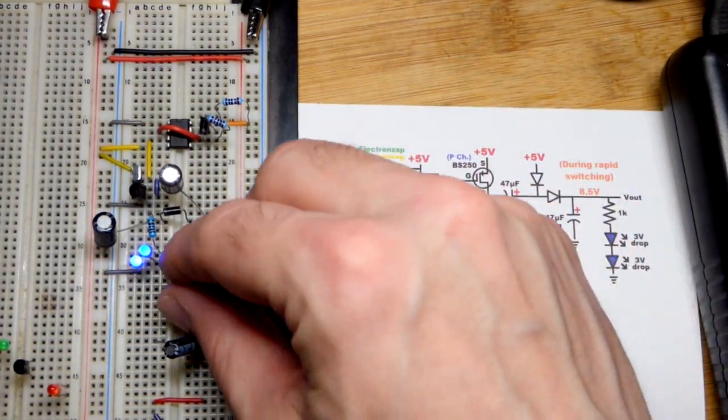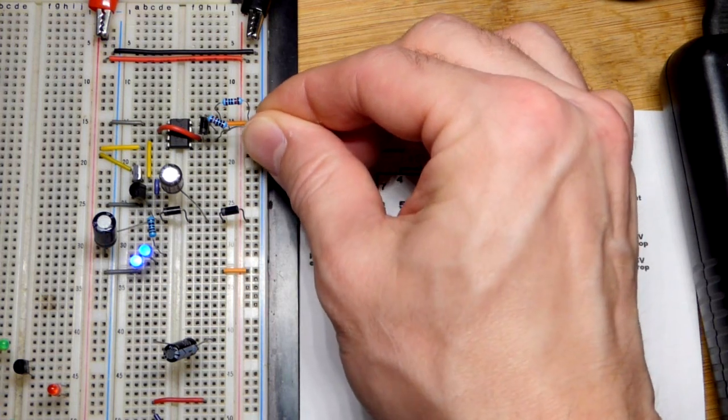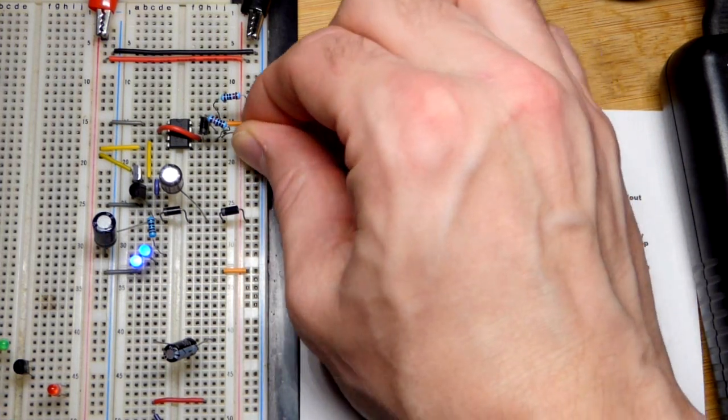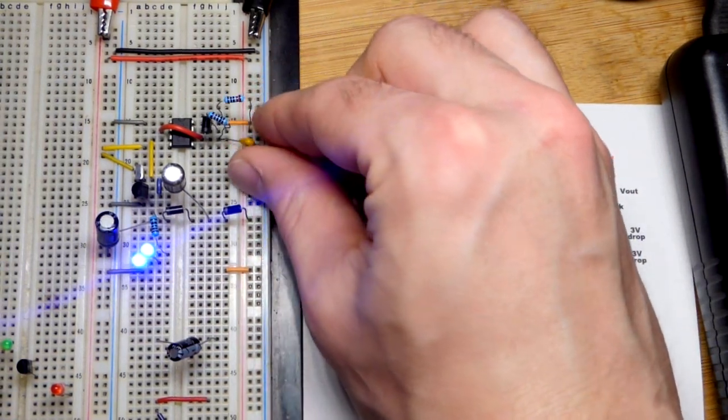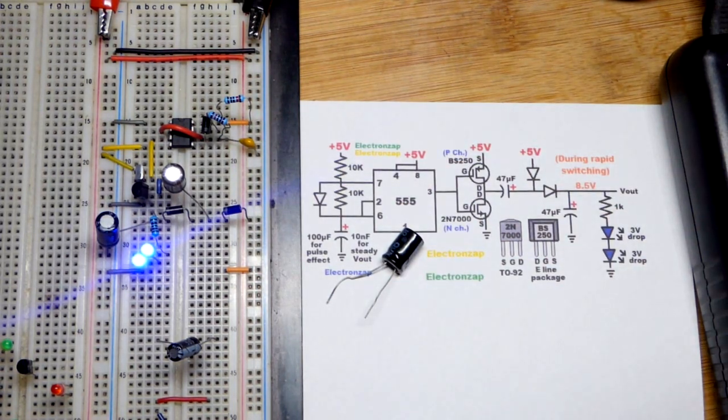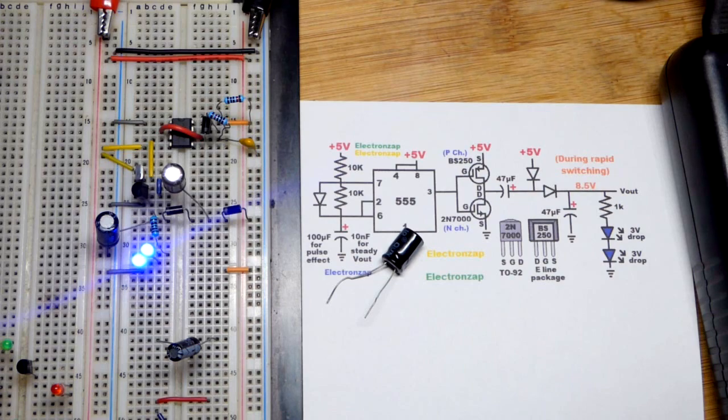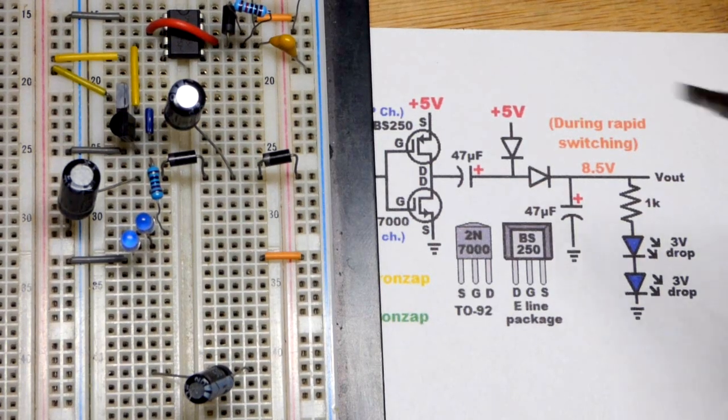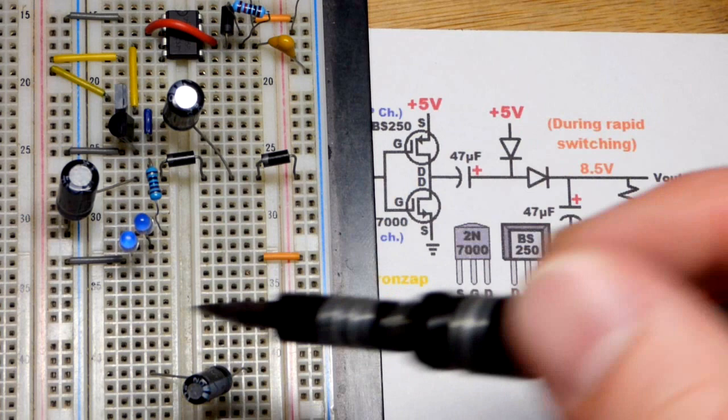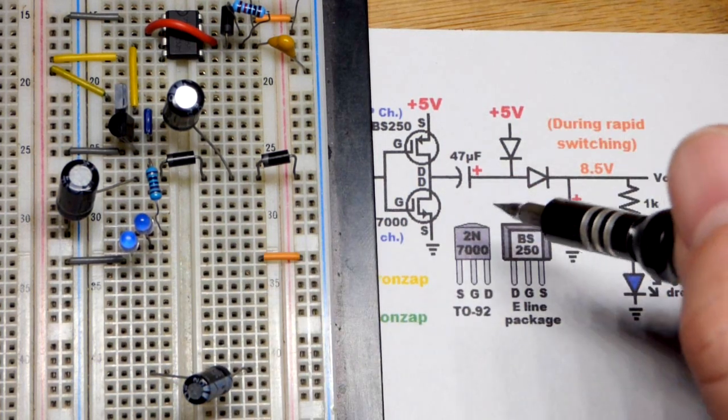We can either leave that pulsing if we like that effect, or we can take a smaller value capacitor and everything else being equal, now we have a voltage doubler where the voltage is holding about steady and the LEDs stay on pretty well. So now we're going to zoom in and look at how this works.